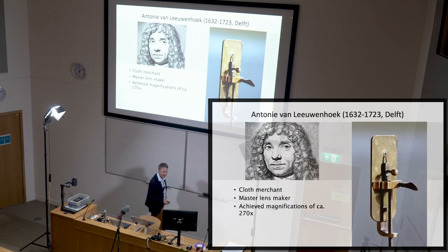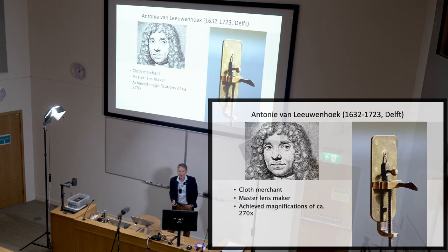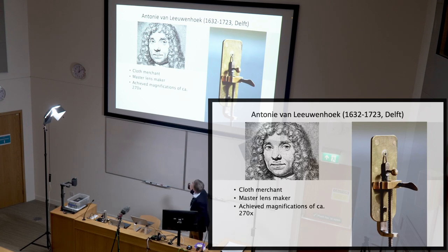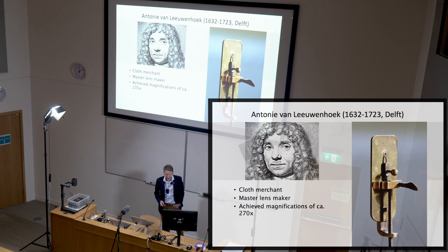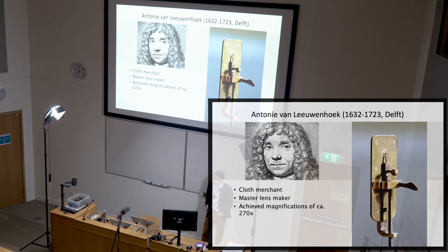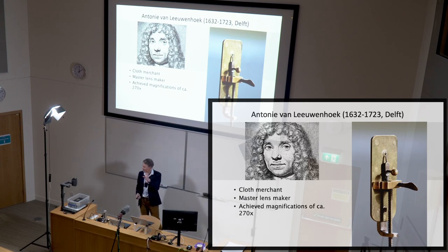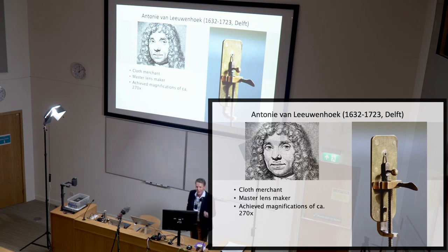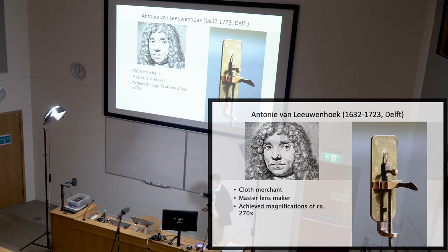The first person to really perfect this instrument was Anthony van Leeuwenhoek, who microscopists often think of as the pioneer of modern microscopy. He lived in Delft in Holland and was a Dutch clothes merchant — very wealthy, as most scientists of the time used to be. He was interested in examining the quality of fabrics he bought and sold, and as a result became a really, really good lens maker.